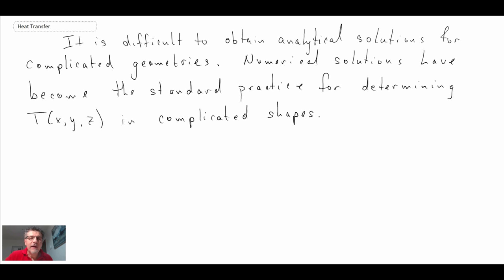So given that, the net result is that if we're studying complex shapes, numerical solutions are typically used to determine the temperature distribution in three dimensions within an object. You can also do time as well - it could be a transient solution. But that is typically what is done if you have a complex shape.